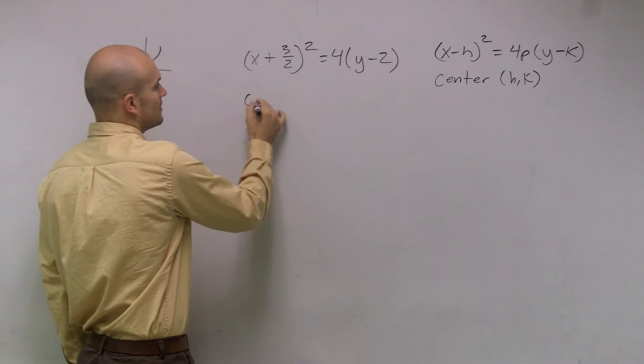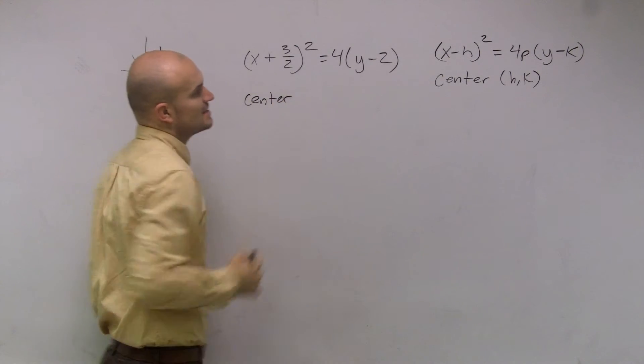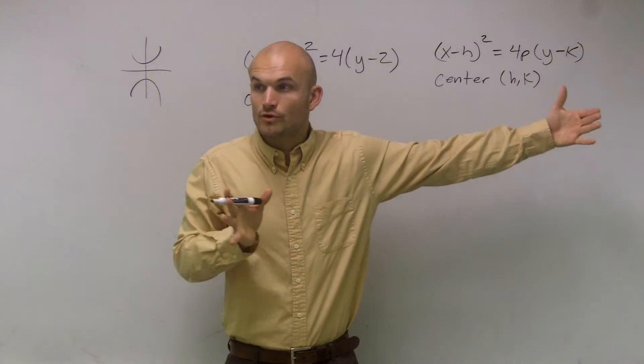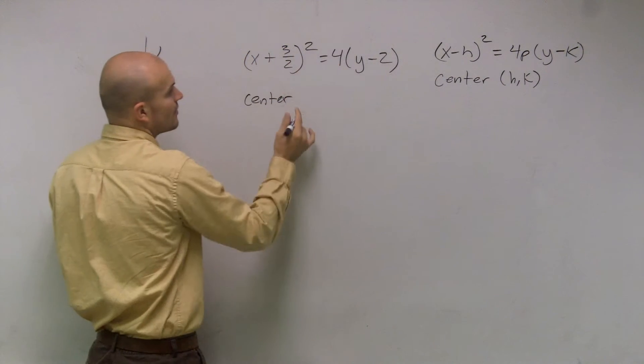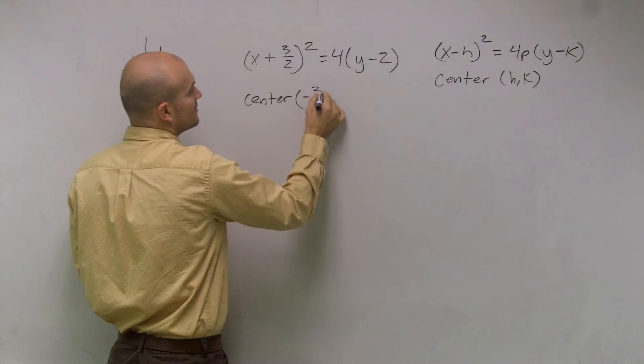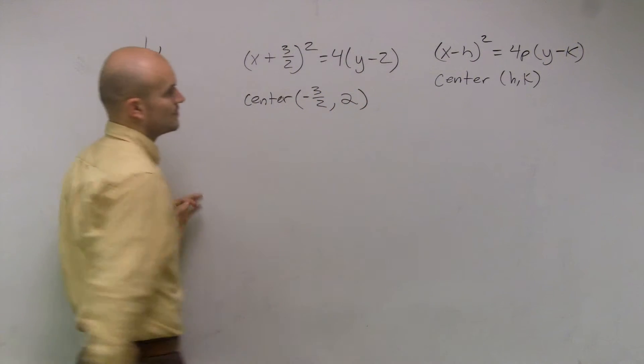When I look at this problem, remember, since our standard form has x minus h and y minus k, we're going to be dealing with the opposite inside of this equation. So my center is going to be negative 3 halves comma positive 2.